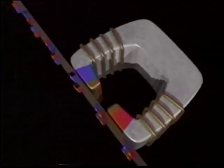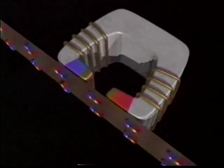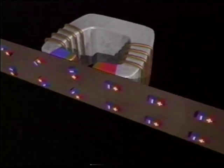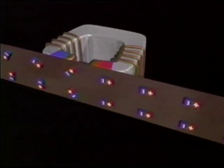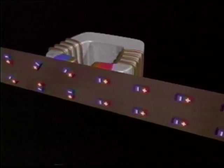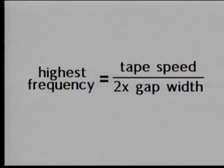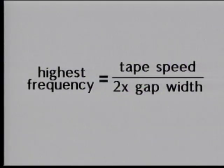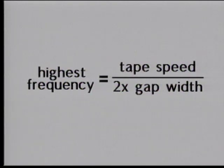Basic physics states that the highest frequency you can record on magnetic tape is determined by two things: one is how fast the tape travels by the head, and the other is how narrow the head gap is — the space between the two poles on the recording head. The maximum frequency you can record is equal to the velocity of the tape as it passes by the head, divided by twice the width of the tape's head gap.